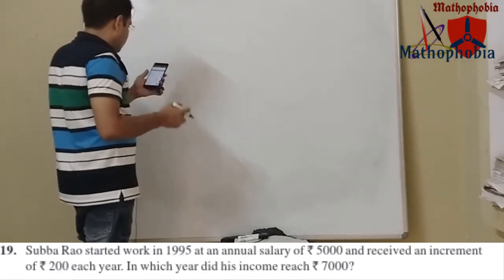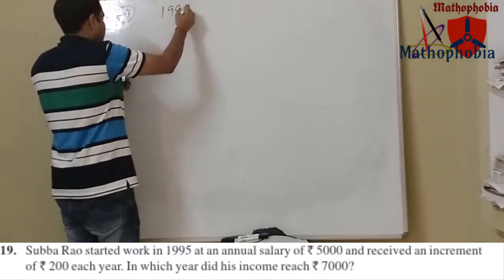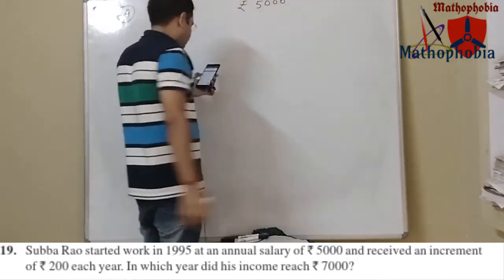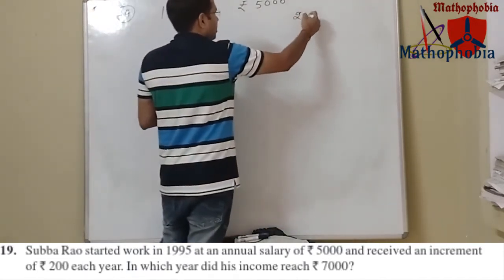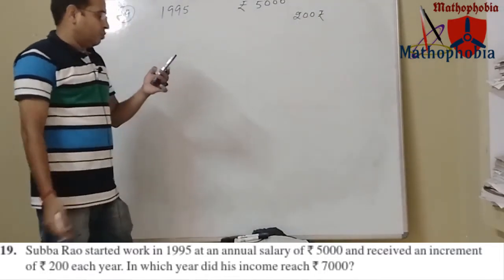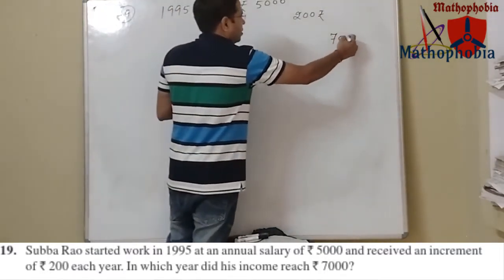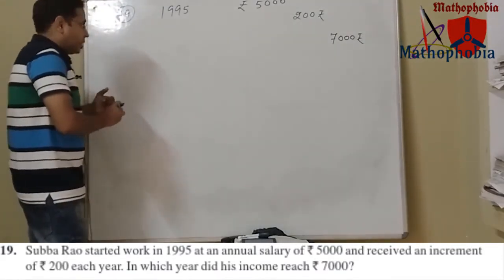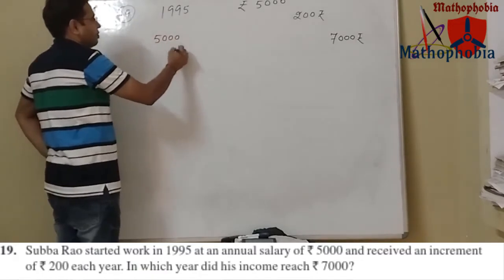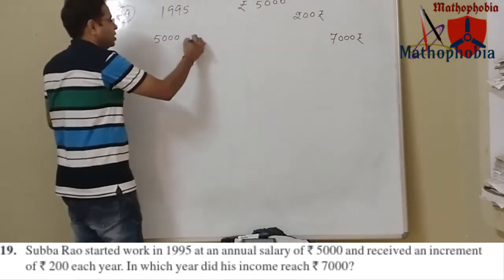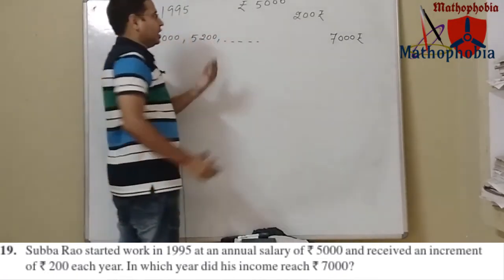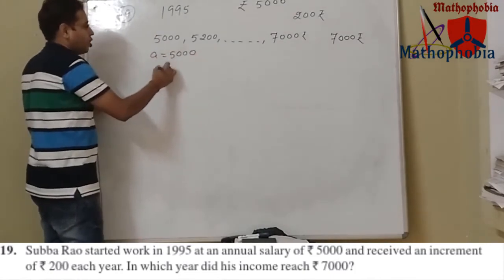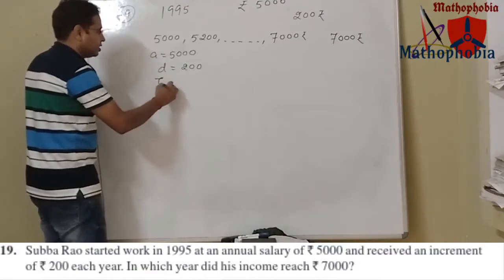Question number 19: Subhash started work in 1995 at an annual income of 5000 rupees, with an increment of 200 rupees each year. We need to find in which year his income reached 7000 rupees. So we have an AP with first term a = 5000, common difference d = 200, and nth term = 7000.